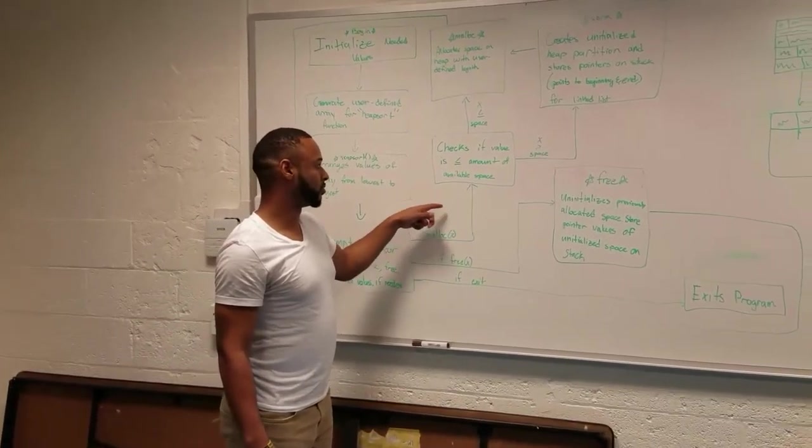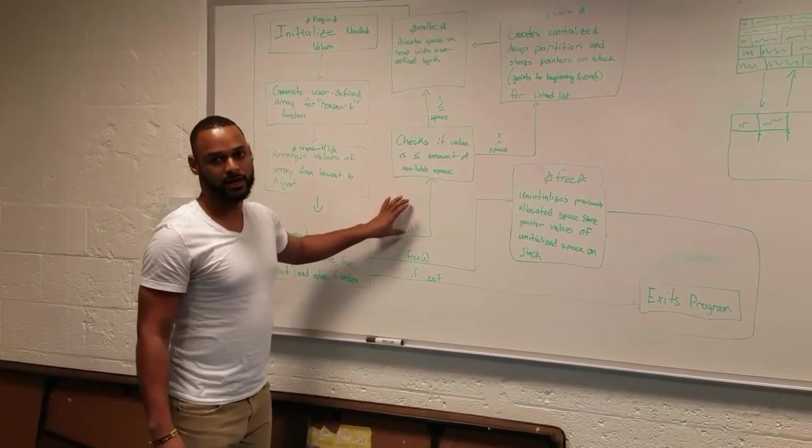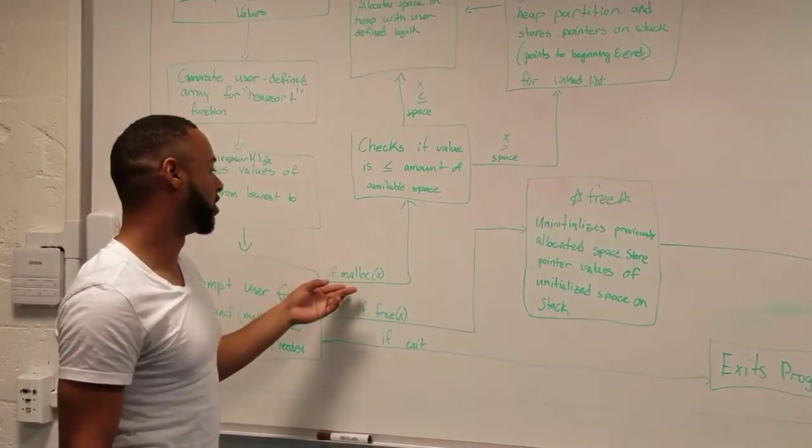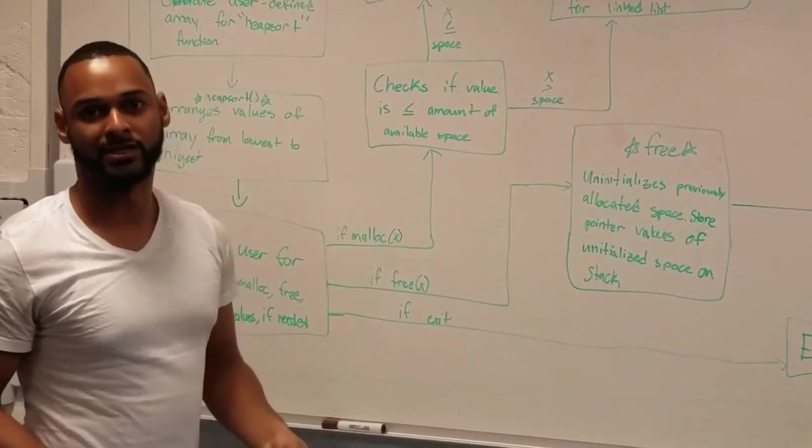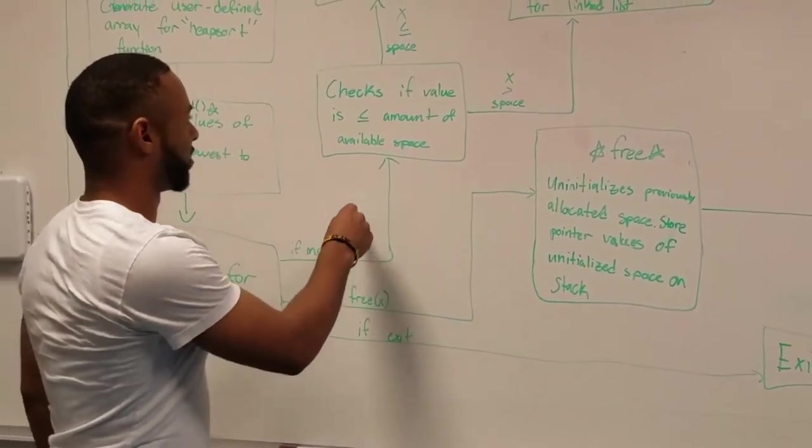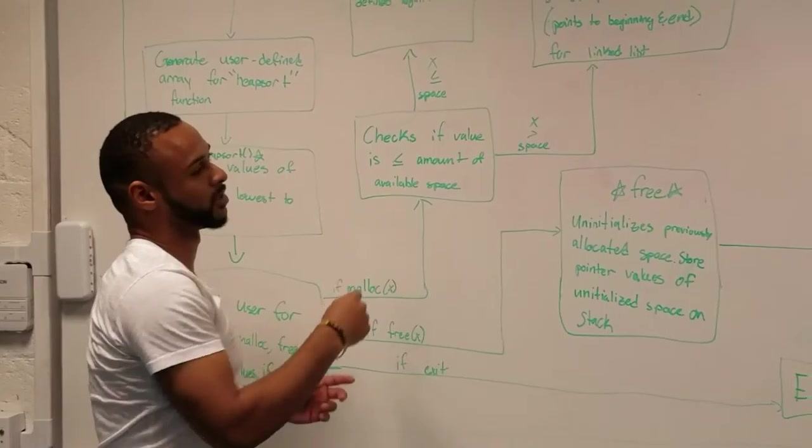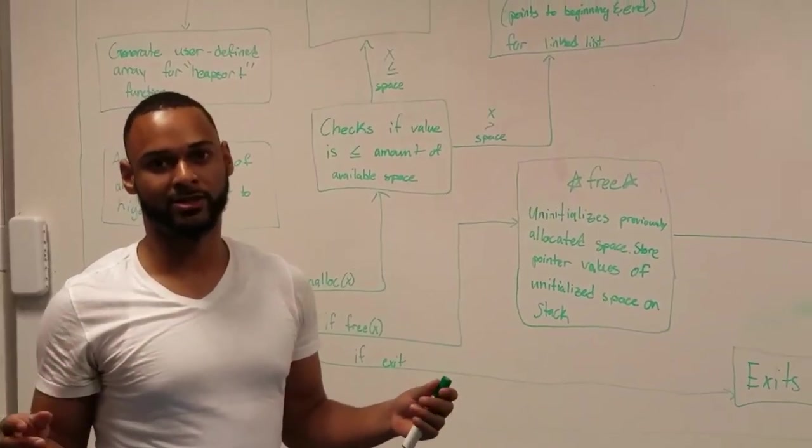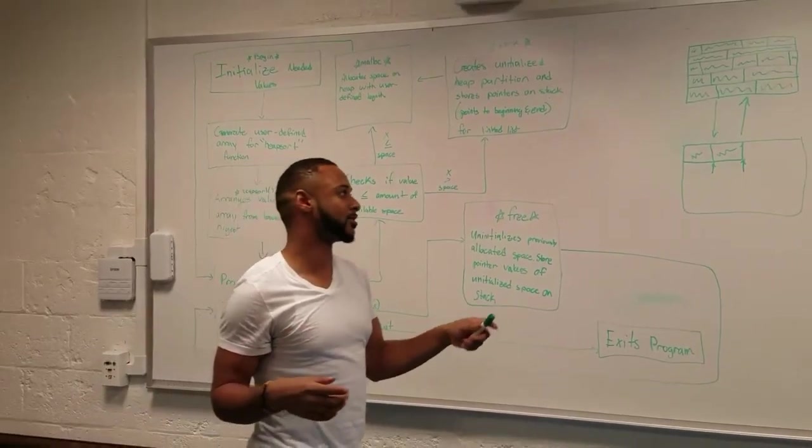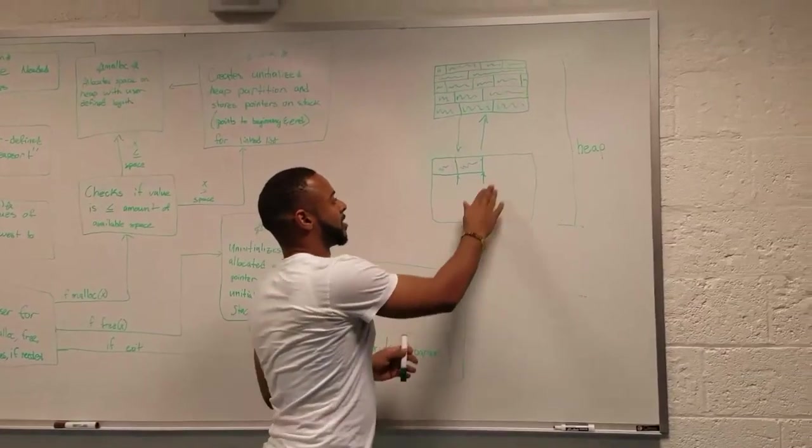That will then subsequently prompt the user to input a number of bytes to basically allocate for the function. At that point, the program will check to see if the number of bytes is less than the number of bytes that are available in the current partition.